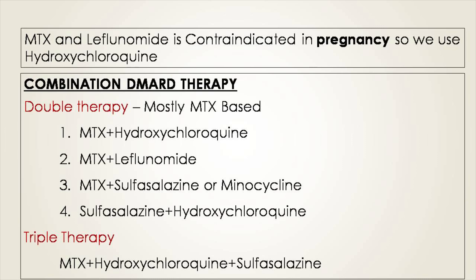Common DMARD combinations are mostly methotrexate-based. The first combination is methotrexate with hydroxychloroquine; the second is methotrexate with leflunomide; the third is methotrexate with sulfasalazine and hydroxychloroquine. You can also combine three drugs — methotrexate, hydroxychloroquine, and sulfasalazine — which is a powerful combination for severe rheumatoid arthritis.